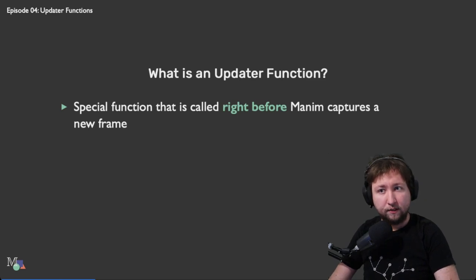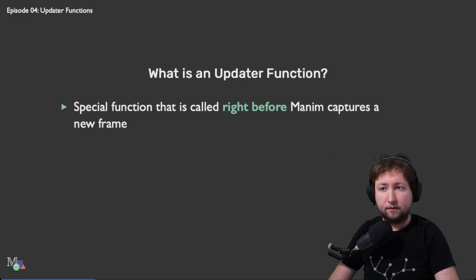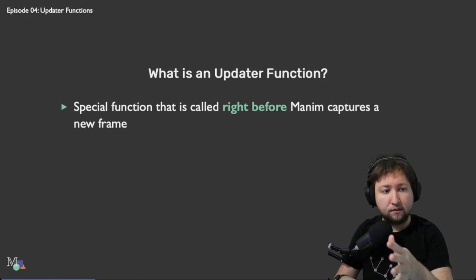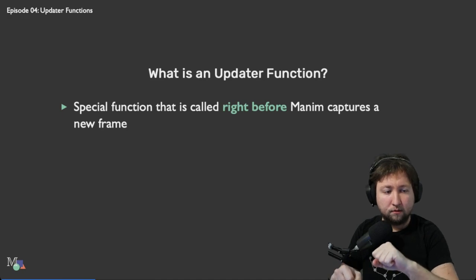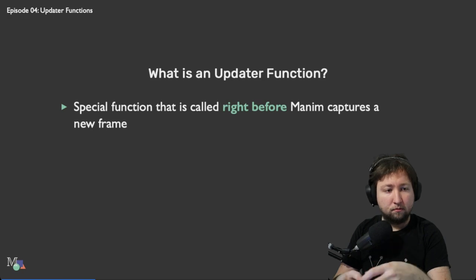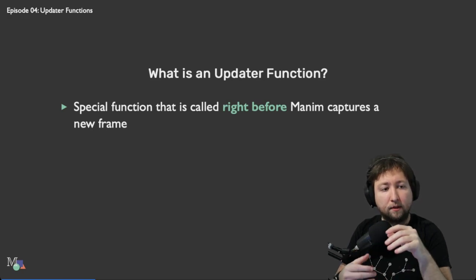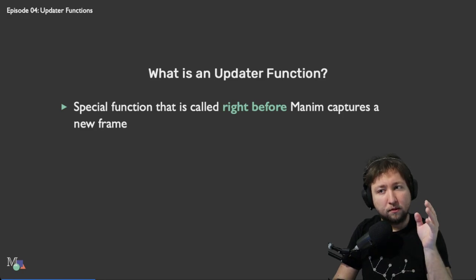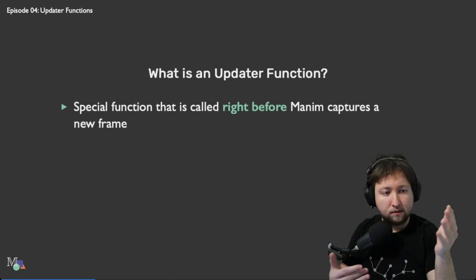First of all, we should talk about what even is an updater function. The answer isn't actually that difficult — it's a special function that is called right before Manim captures a new frame. Manim constructs a timeline, evaluates the scene, positions of objects, and all the stuff that happens, evaluating them in certain time steps. At these points it constructs a frame, the camera captures it, the renderer renders it. Before that happens at each time step, these updater functions are called and the scene is updated accordingly.